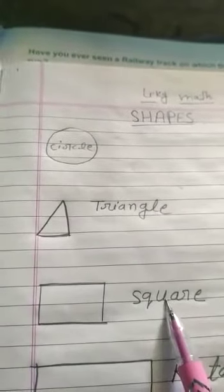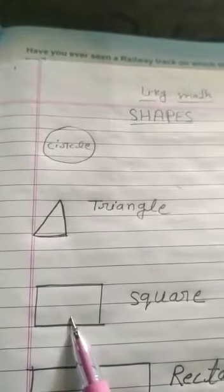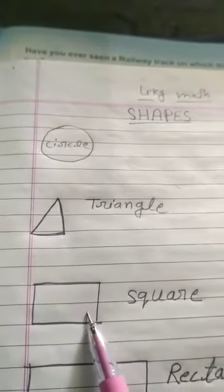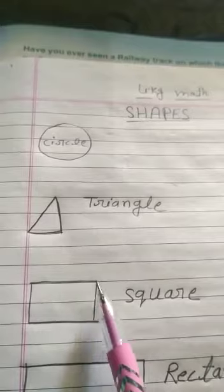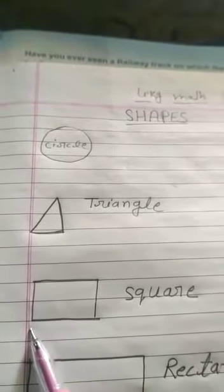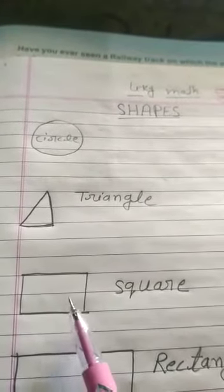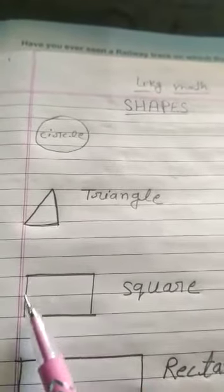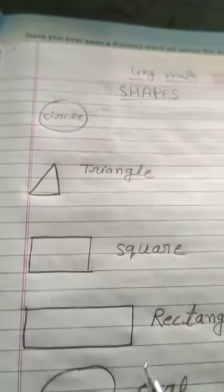Next, square. This is a square. It has four sides. One, two, three, four. All sides are equal. Sabhi side kya hootay hain? Barabar hootay hain.